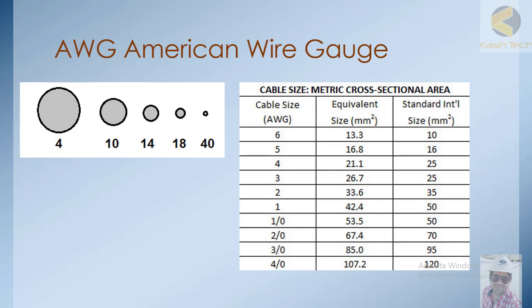The area of a cable can be measured in different units — millimeters, centimeters. A very common measurement method is AWG, which stands for American Wire Gauge. In AWG, gauge 4 has more cross-section area than gauge 10, and gauge 10 has more than gauge 14 — so as the AWG number increases, the cross-section area decreases.